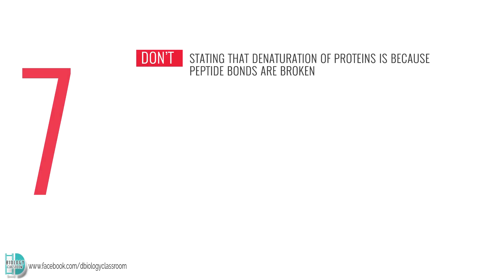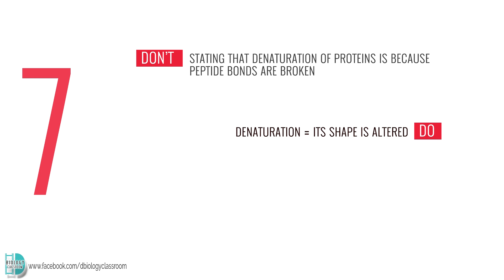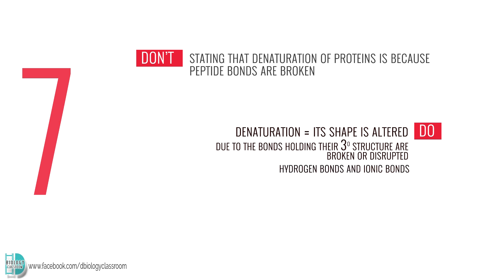Number 7: stating that denaturation of proteins is because peptide bonds are broken. Denaturation of proteins occurs when its shape is altered. This happens when the bonds holding their tertiary structure are broken or disrupted, and the most common ones are hydrogen bonds and ionic bonds.